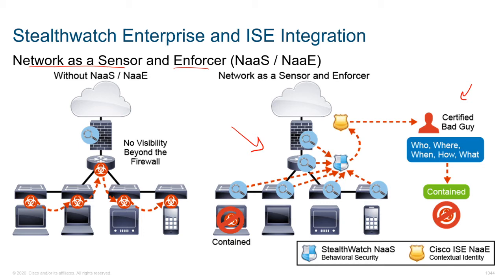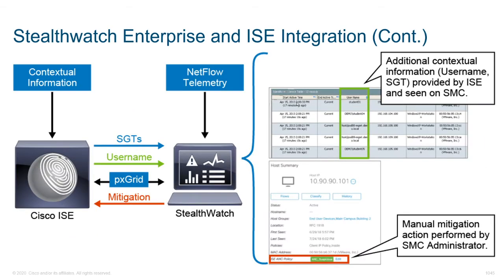Without the integration of Stealthwatch, we might be missing out on that additional line of defense. When we integrate the two, not only are we looking at contextual information from ISE, but we're also looking at the NetFlow telemetry. We can go back and forth with security group tags and pxGrid.